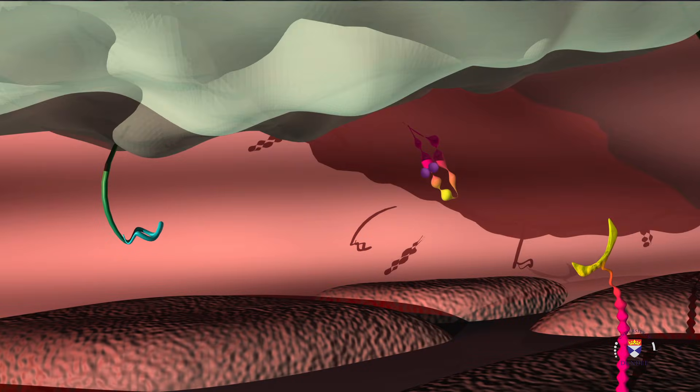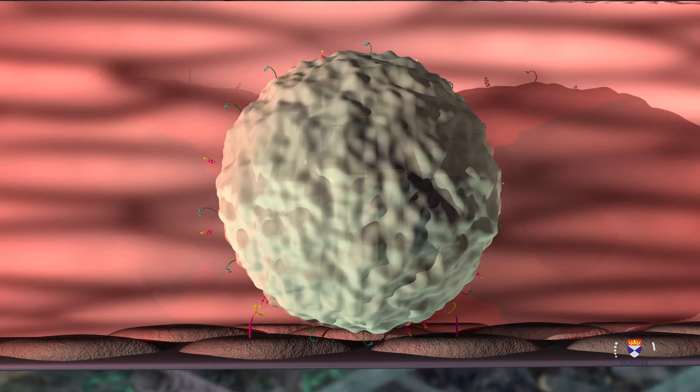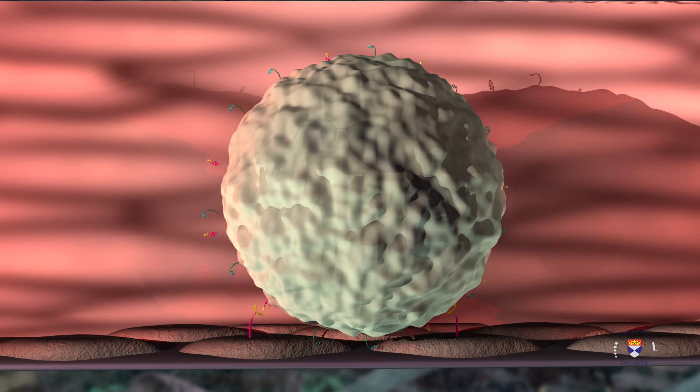Chemokines will bind with the leukocyte to activate it, which induces a change in the structure of integrin. This change makes it bind ICAM tightly. The leukocyte stops rolling once it's tightly bound and flattens against the vessel wall.